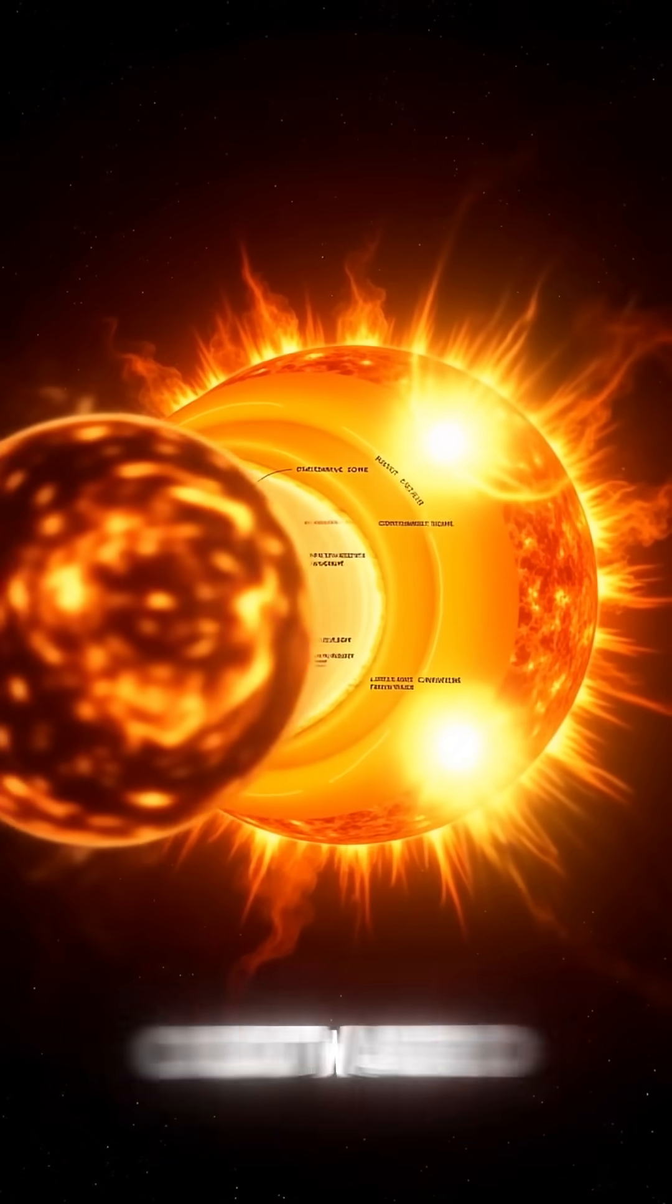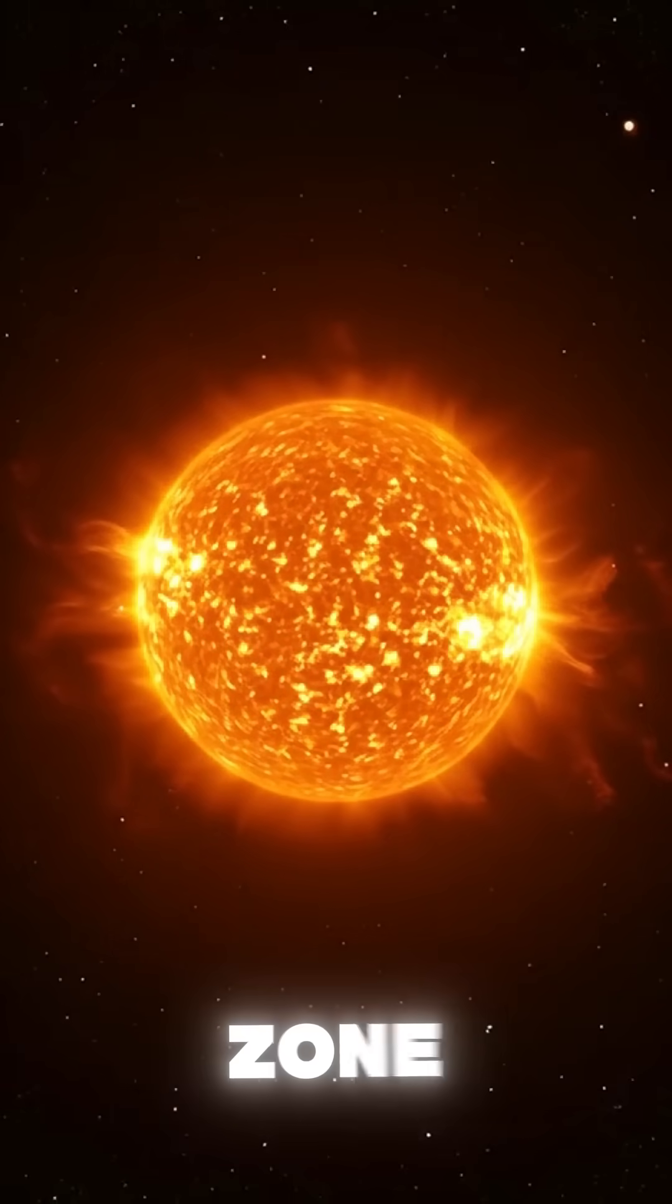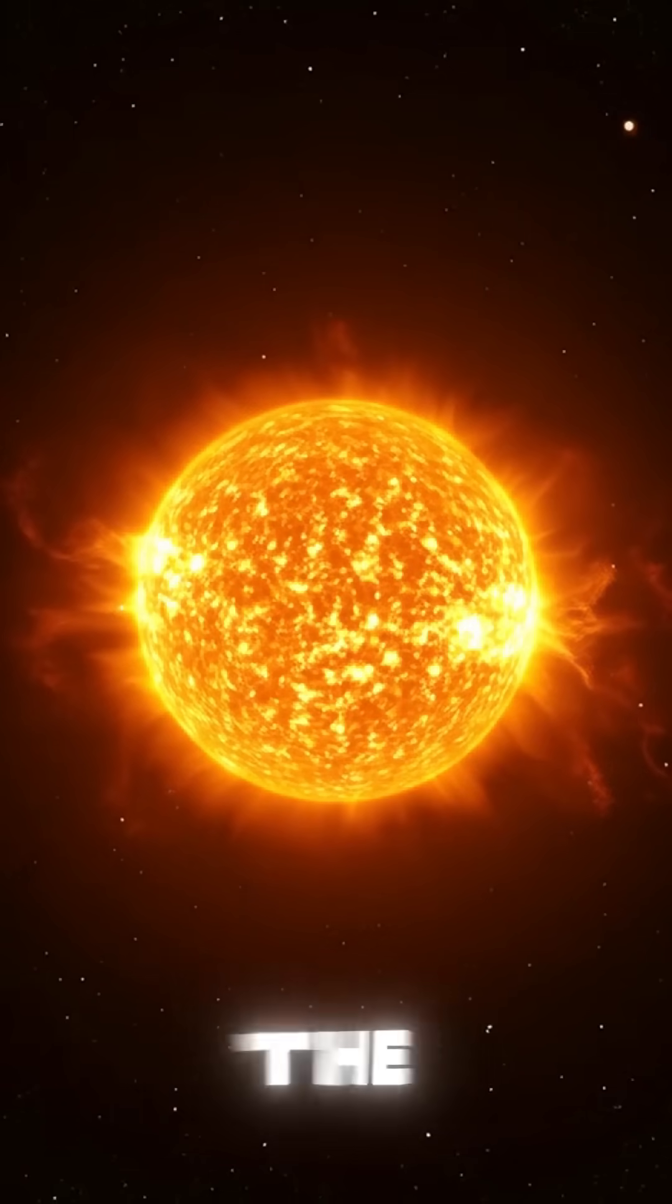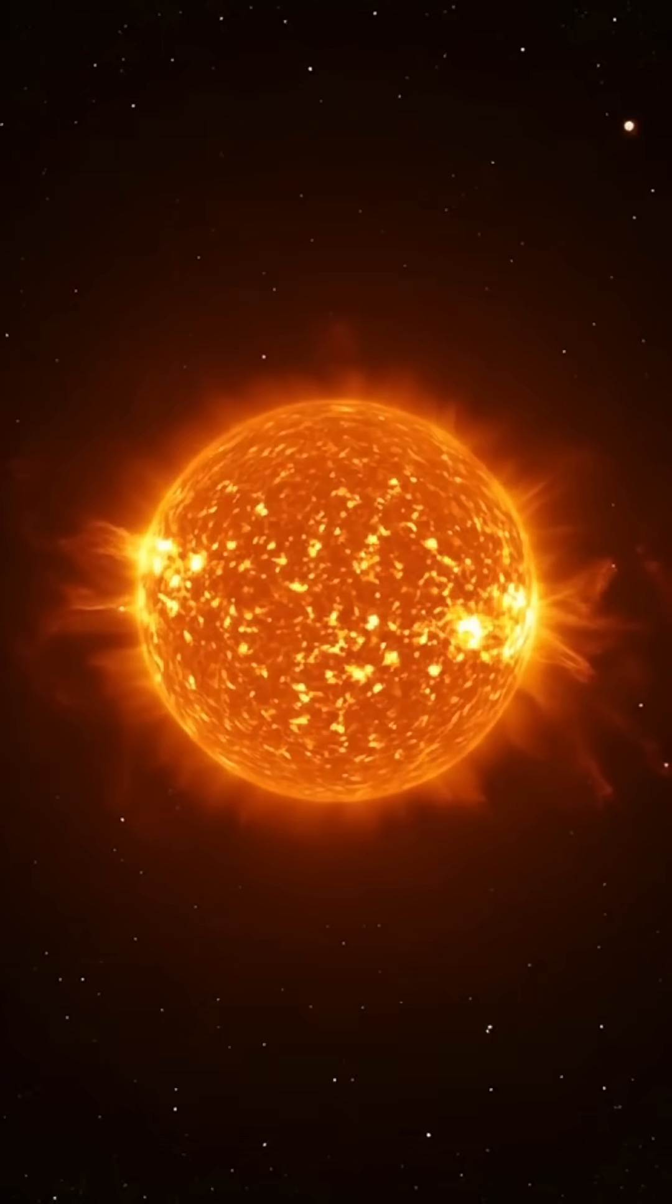This energy travels outward through layers: the radiative zone, the convective zone, and finally the surface, or photosphere, where sunlight escapes.